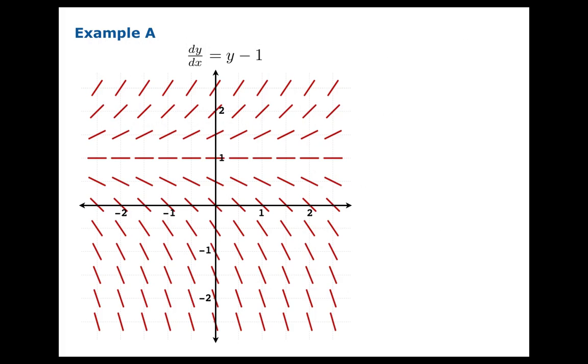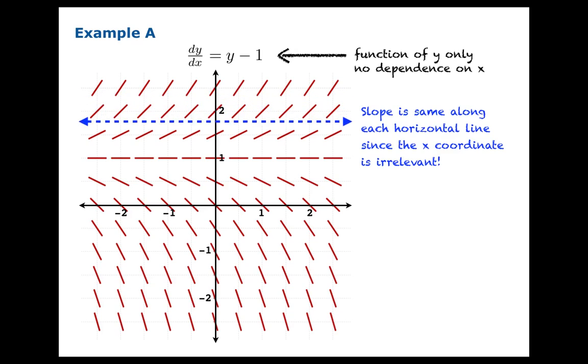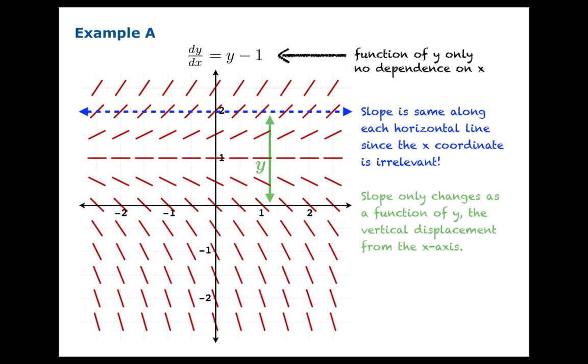Let's look at three examples of slope fields and make some observations. Here's Example A: dy/dx equals y minus 1. The thing you'll notice here is the formula for dy/dx is a function of y only, and there's no dependence on x. This is reflected in the slope field in that the slope we draw is the same along each horizontal line, since the x-coordinate is irrelevant. The only thing that matters is the y-coordinate. So the slopes change as a function of y, they stay the same as a function of x.